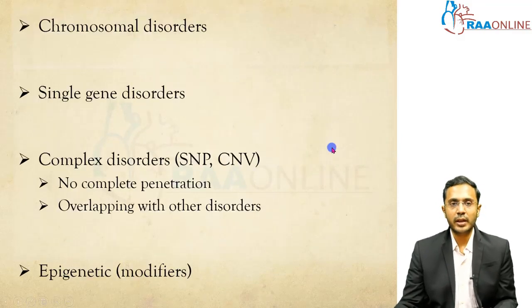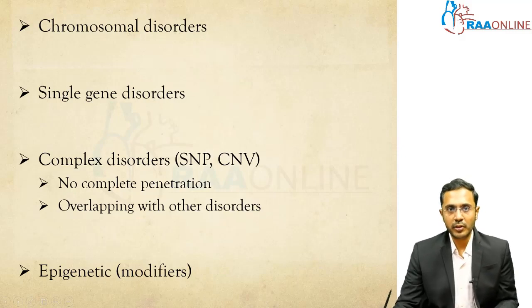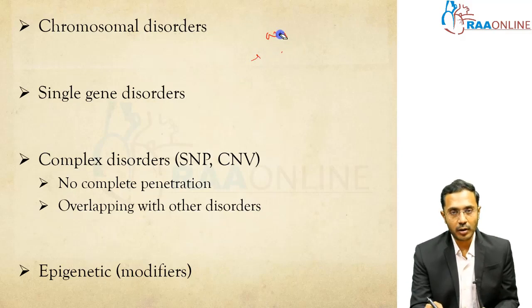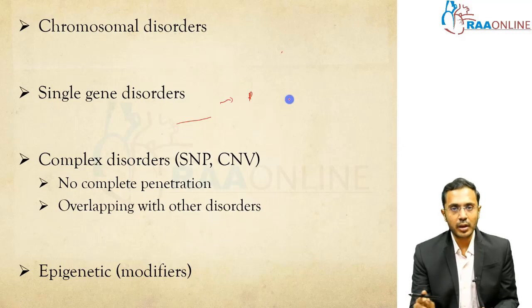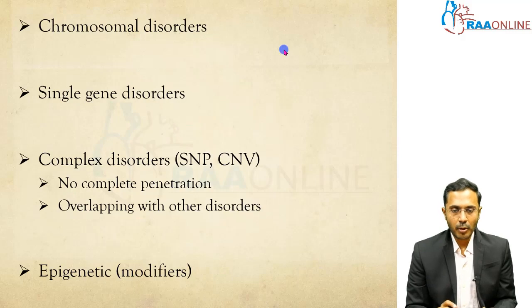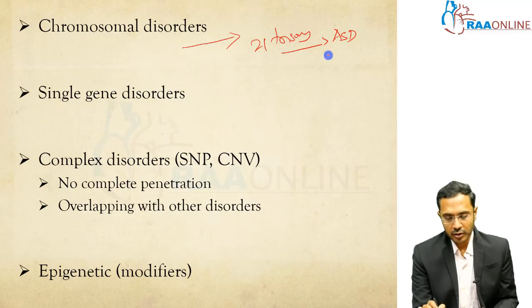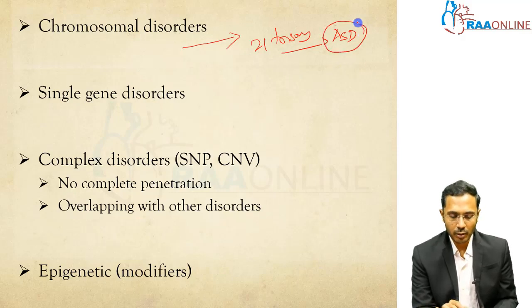If you see genetic factors, these are the examples. It can be due to abnormal chromosomes — the chromosome itself is abnormal. For example, Down syndrome can present as autism, or other chromosomal disorders like Edwards and Patau can present as Autism Spectrum Disorder. Some children with Down syndrome do have autism spectrum disorder — this chromosomal abnormality presenting as ASD is one example of genetic etiology.